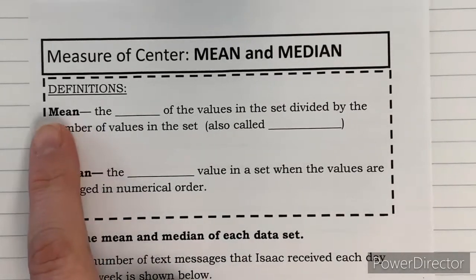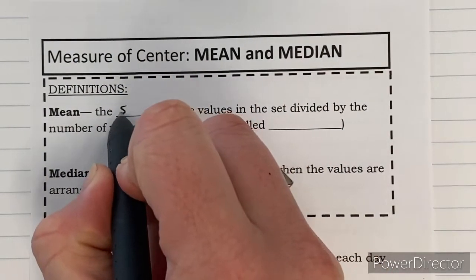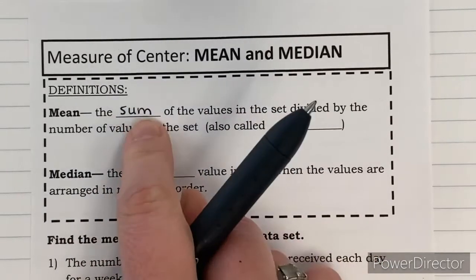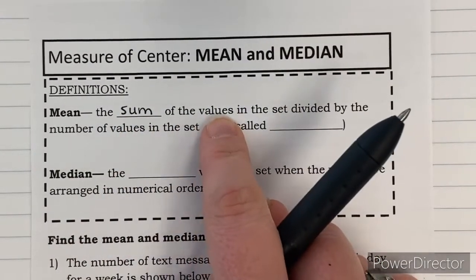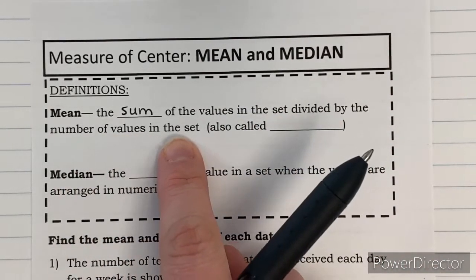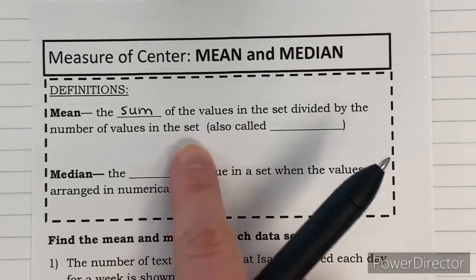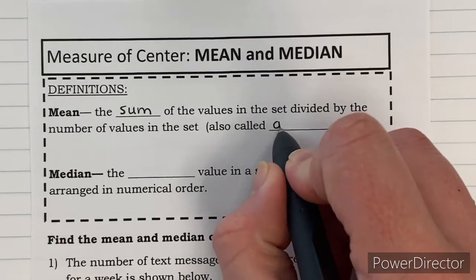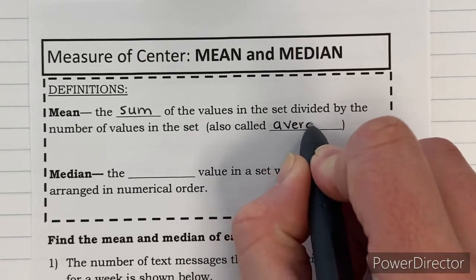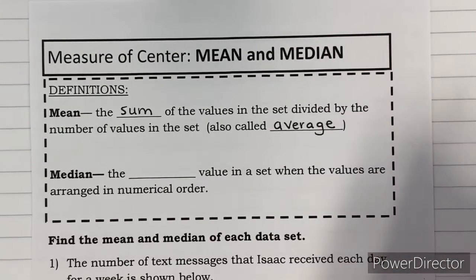So we're going to start with the Mean. The Mean is the sum of the values in the set divided by the number of values in the set. You add all the values up and divide by how many there are. This is also called average. That's the word that we see or hear more often. Mean and average, they mean the same thing. You just add the numbers up and then divide by how many there are.